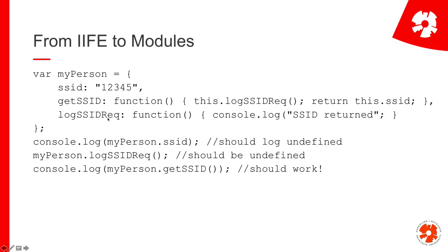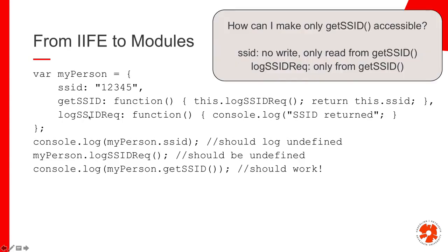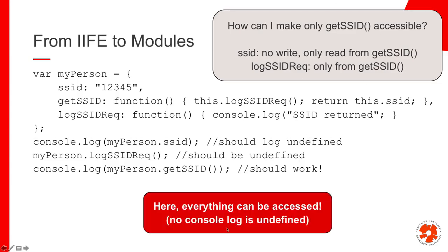The important point is: we would like to say if someone directly tries to access the attribute, it should be undefined - that should not be possible because the ID itself should be private. You have to use the functions. If you can access it directly, we're not logging anything, and that's not good. The logging function itself should also be private - no one should just say 'please log'. This should only happen internally: whenever we call get, log should be called, but no one should be able to call it directly. The only thing accessible should be the getSSID function. But in a plain object, everything can be accessed - nothing causes any issues, and that's not what I want.